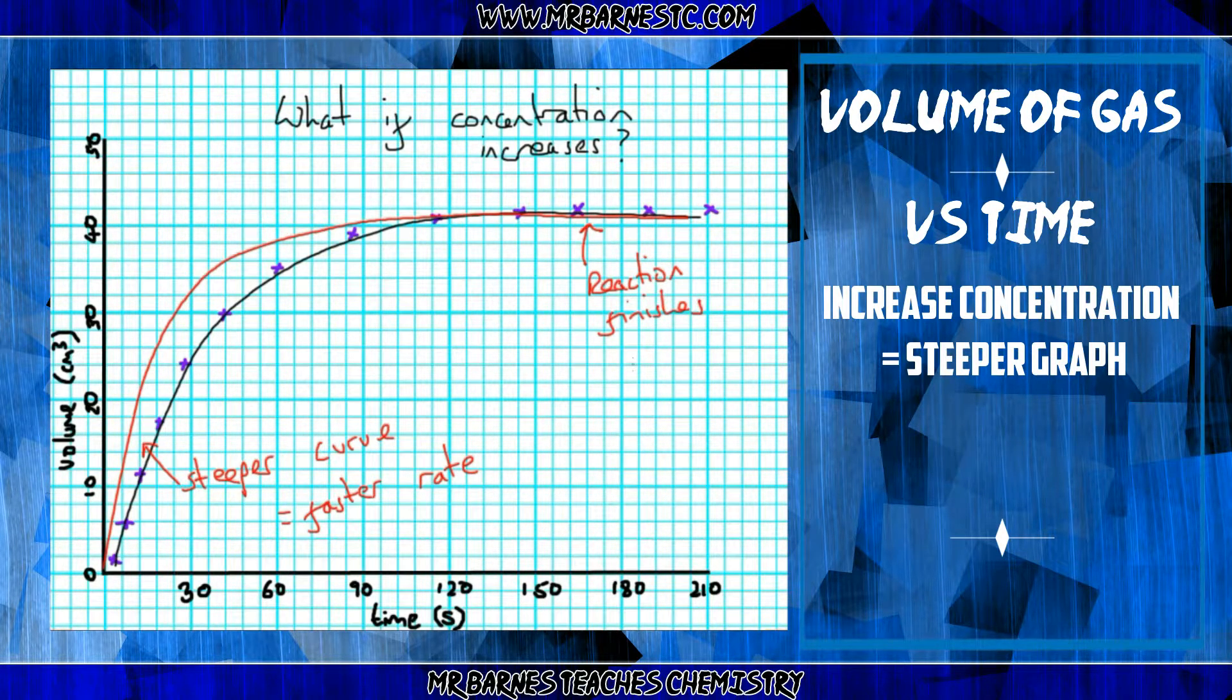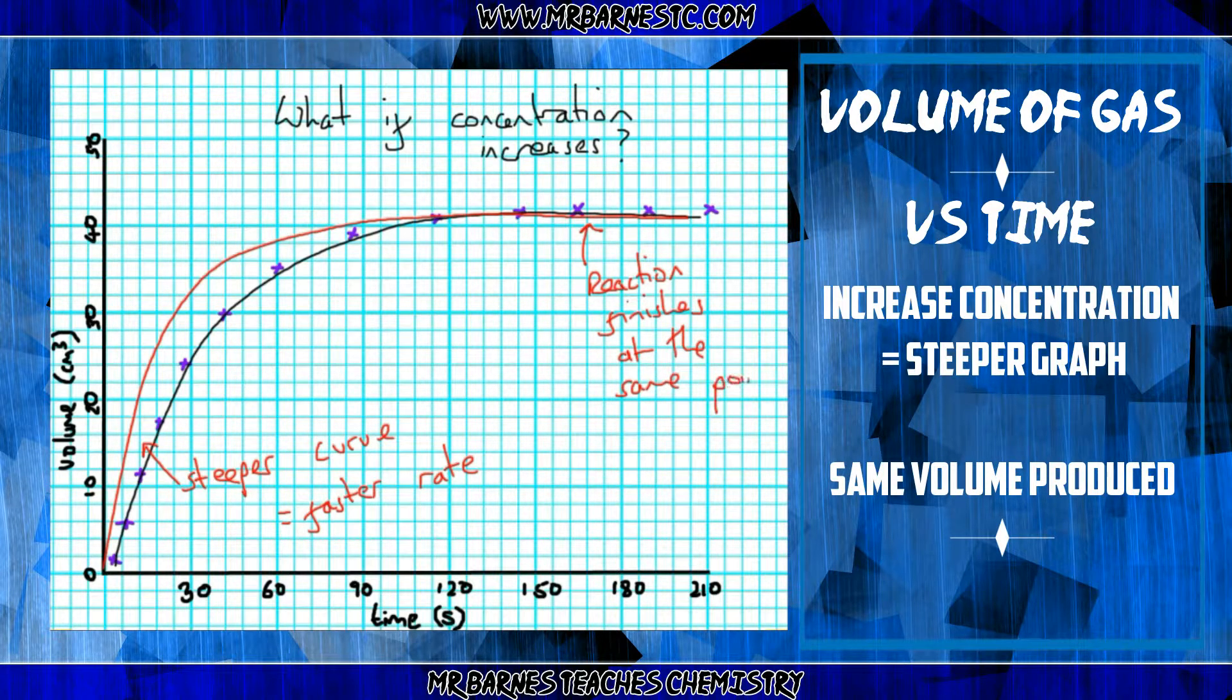It's important to note however, that if you increase the concentration of say the acid, but keep the marble chips the same, the reaction will always finish at the same point, when that marble chip has been used up. Therefore, the flat part of the graph will always stay exactly the same volume.